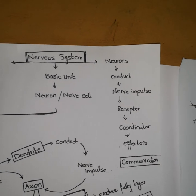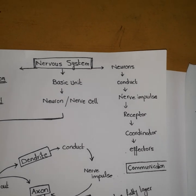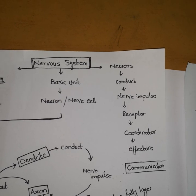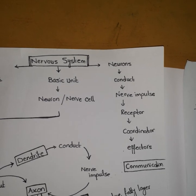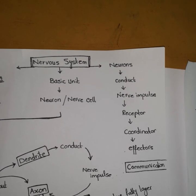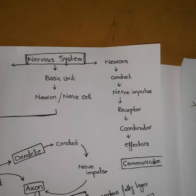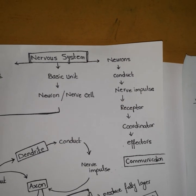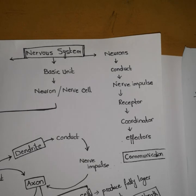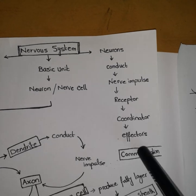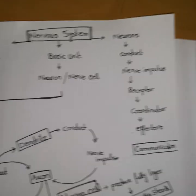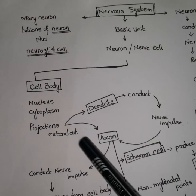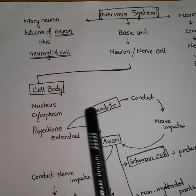The neuron transmits and receives the message from the receptor, then moves this message toward the coordinator, and then the effector shows the effect. This is all about the neuron, and different types of neurons will be involved in this process. Now we will discuss the structure of the neuron.